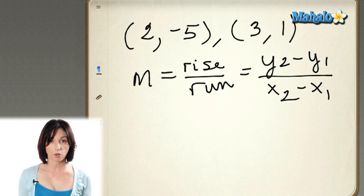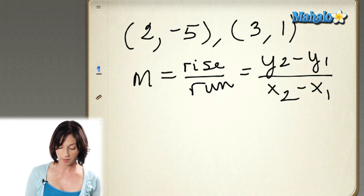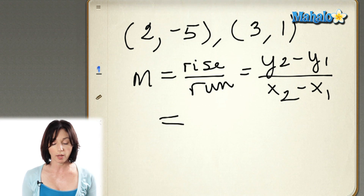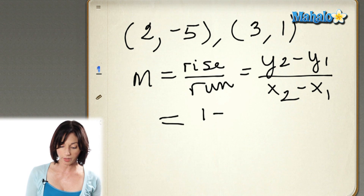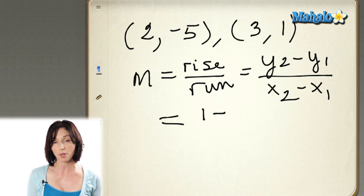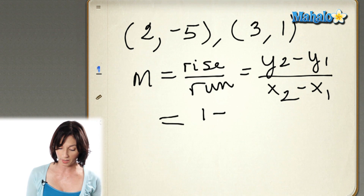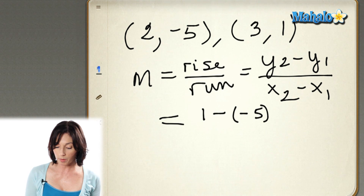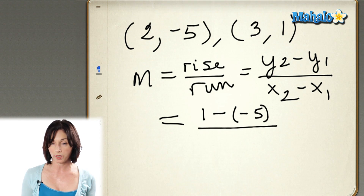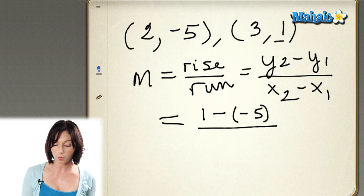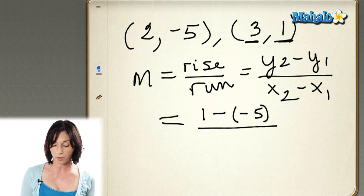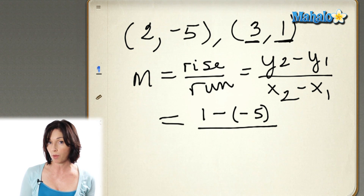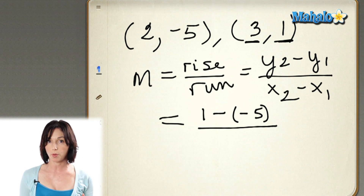Let's try it with the points we have here. I'm going to take one of my y coordinates — I'm going to take the 1 — and then I'm going to subtract from it the other y coordinate, the -5. So, 1 minus negative 5. And that's going to be over the difference in the x coordinates. Since this was the y coordinate I picked first, I need to make sure I put this x coordinate first on the bottom, otherwise my slope will have the wrong sign.